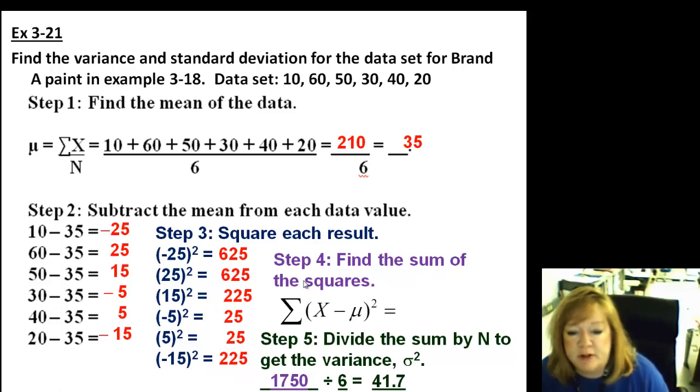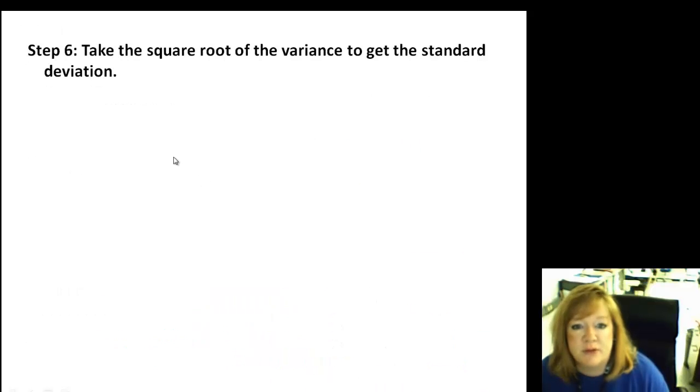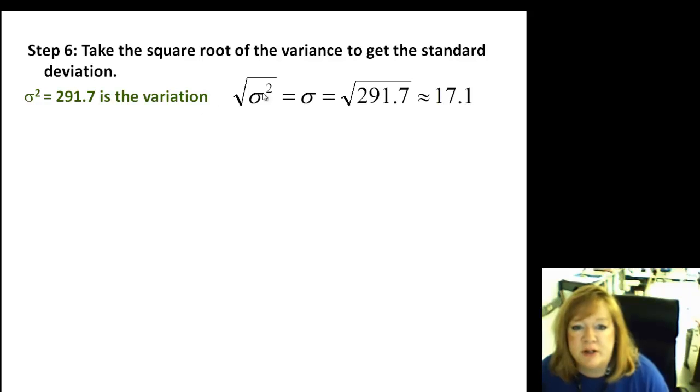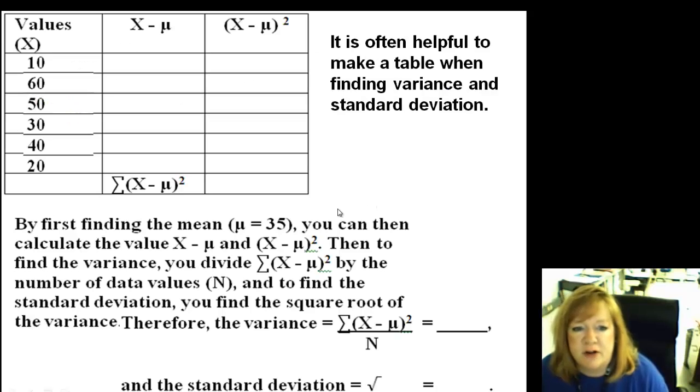Then you're going to divide the sum by n, how many data items there were. There were six to get the variance. So 1750 divided by six is 291.7. So that's the variance. So to get the standard deviation, what's nice is once you have the variance, all you have to do is take the square root to get the standard deviation. So this little guy squared is 291.7, that's the variation. Standard deviation is going to be the square root of that, which is 17.1. So there's your standard deviation. Hence, 17.1 is the standard deviation. It's kind of how far the things are from the mean.